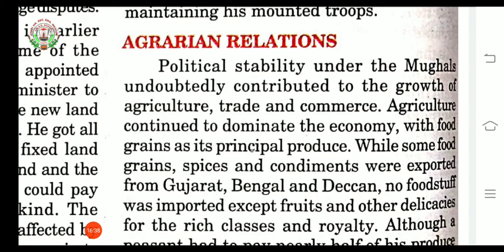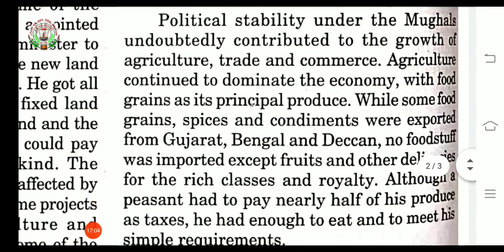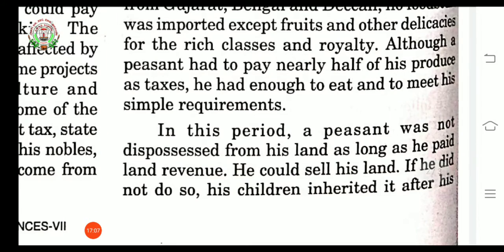The peasant had to pay nearly half of his produce as tax, but they had enough to eat and to meet their simple requirements. In this period, a peasant was not dispossessed from his land as long as he paid the land revenue. Dispossessed means deprived. They were not deprived of their land as they were paying the land revenue.